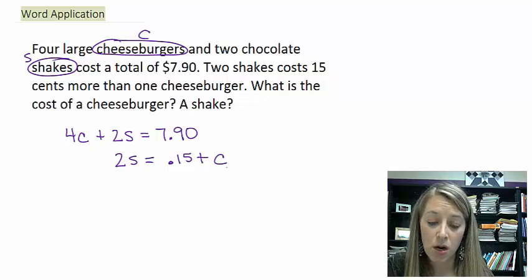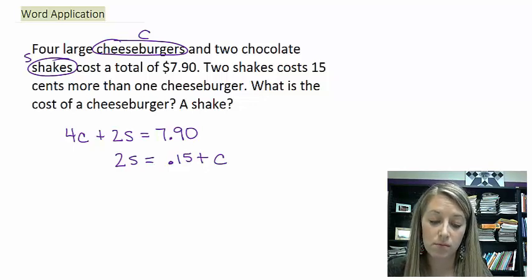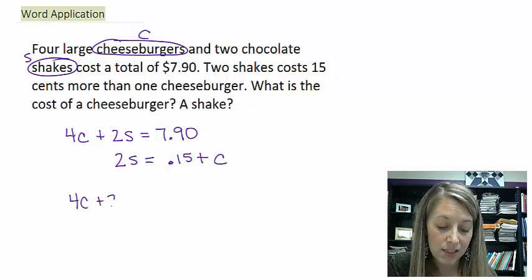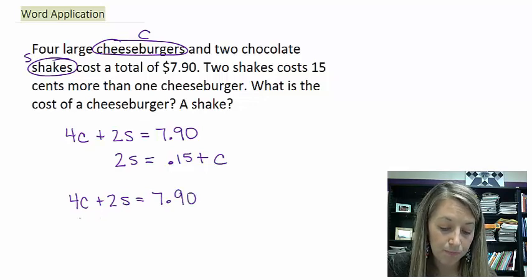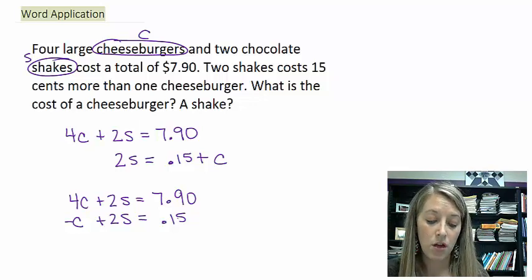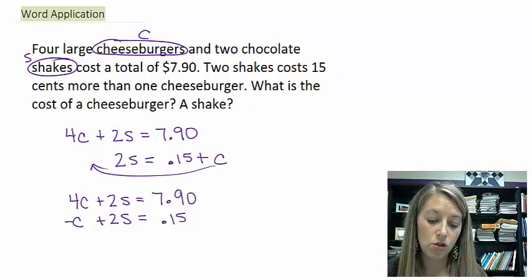So if I take a cheeseburger and add $0.15 to it, that's equivalent to the cost of two shakes. Now I have my system of equations. I can rearrange it into standard form if needed, or skip that step if using substitution. For those who prefer proper form: two shakes minus the cost of the cheeseburger equals $0.15 — all I needed to do was move the cheeseburger over to the other side.